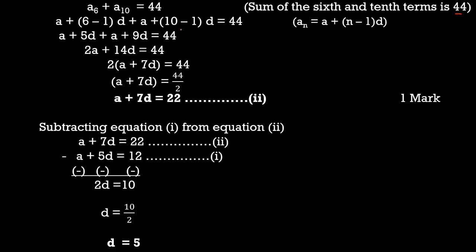The sixth term is a₆ and the tenth term is a₁₀. Their sum is written as a₆ + a₁₀ = 44. Using the formula for the nth term of an AP: aₙ = a + (n−1)d.